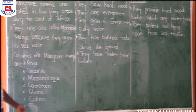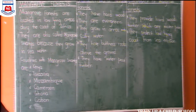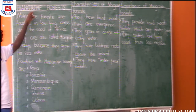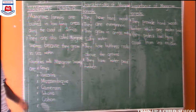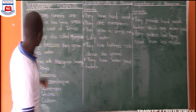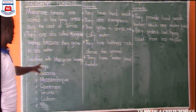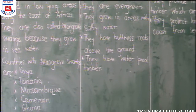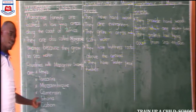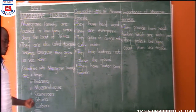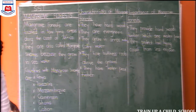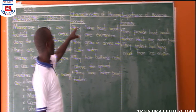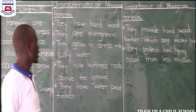You are also going to find another country like Ivory Coast. Ivory Coast in West Africa has mangrove forests. So there are only two countries in East Africa which have mangrove forests: Kenya and Tanzania. Countries of West Africa include Ghana, Nigeria, and Ivory Coast — those three countries have mangrove forests. Mangrove forests have good features or characteristics.